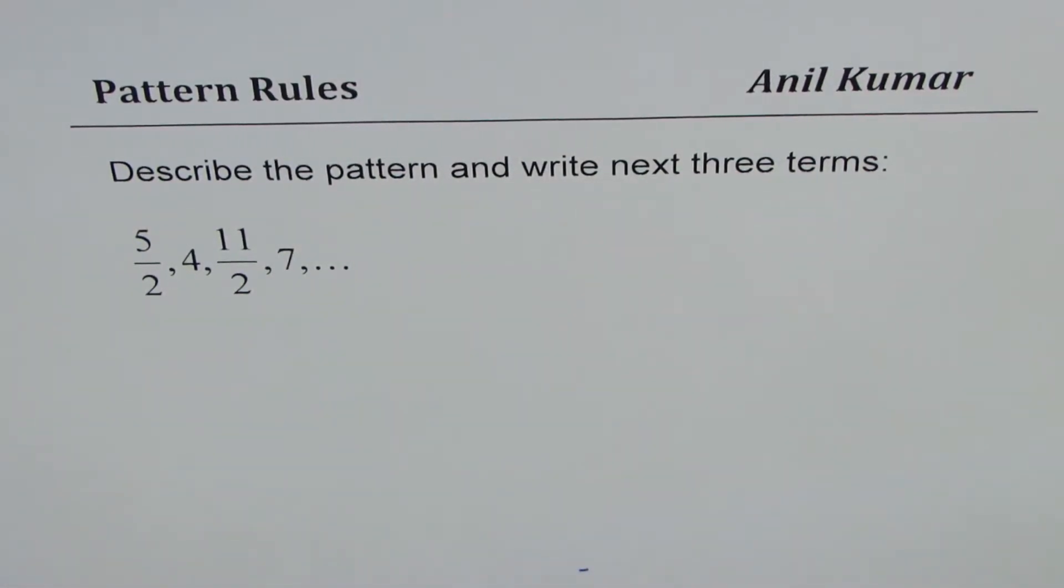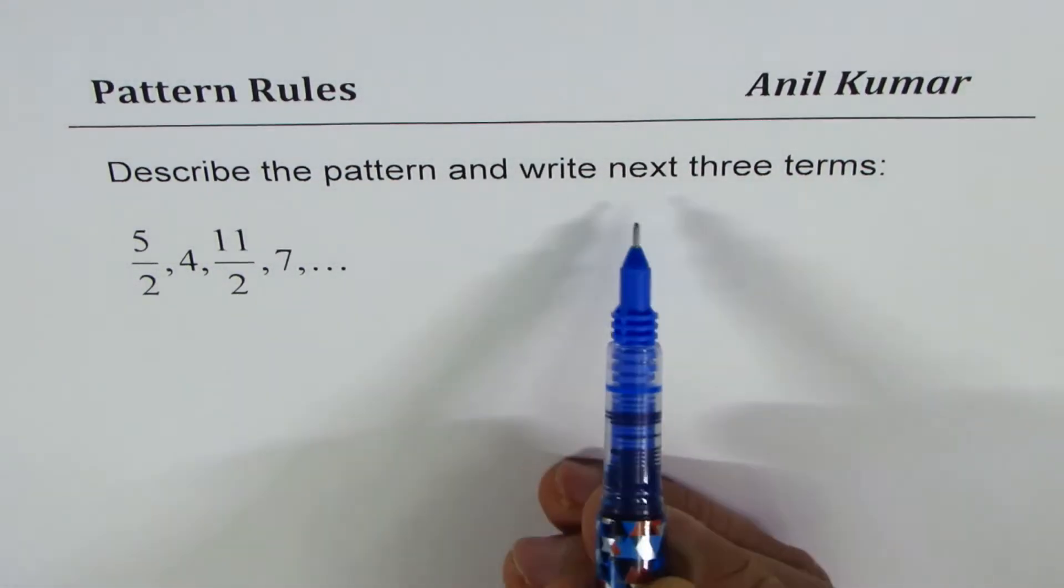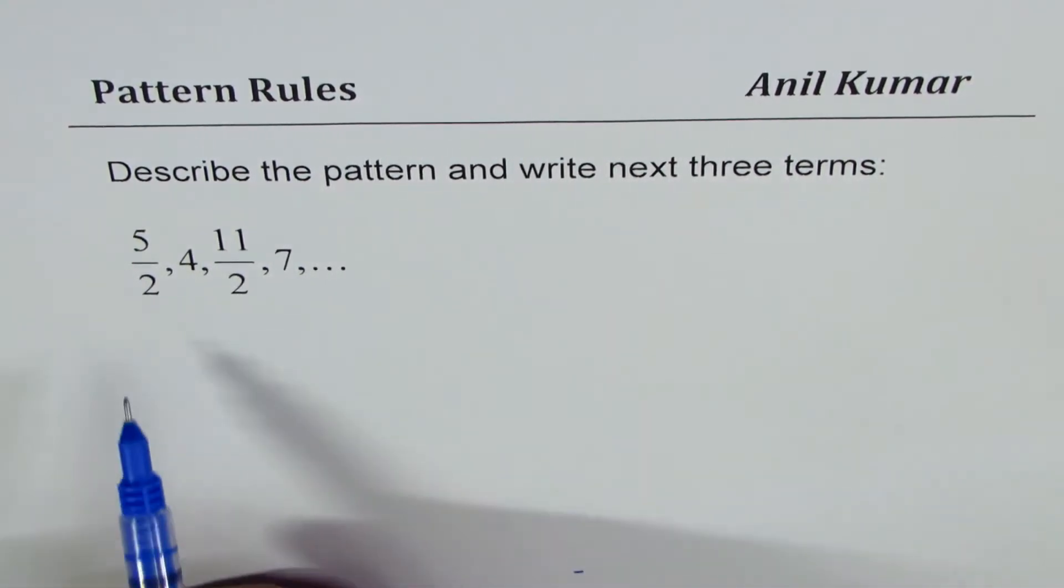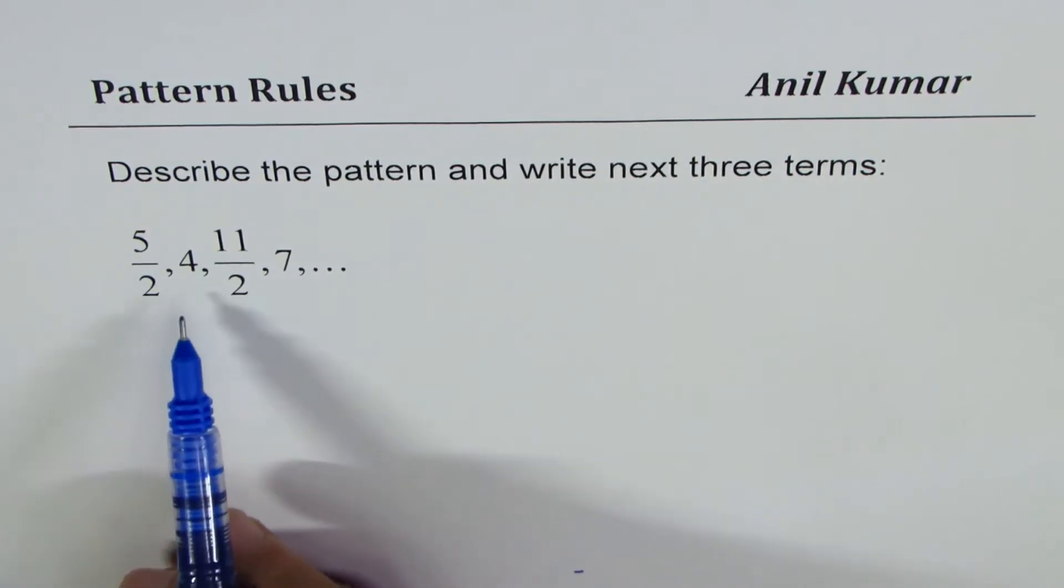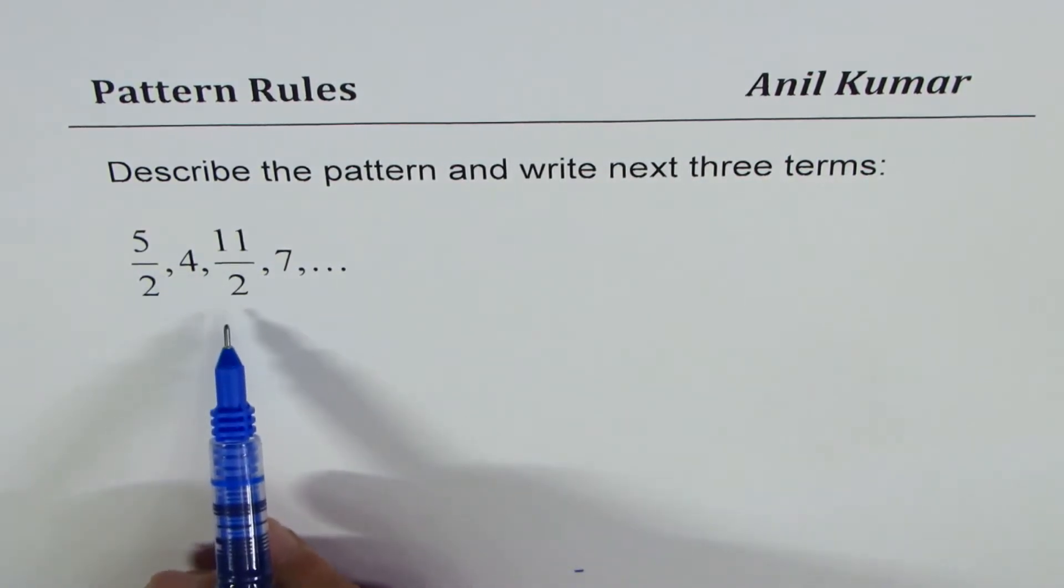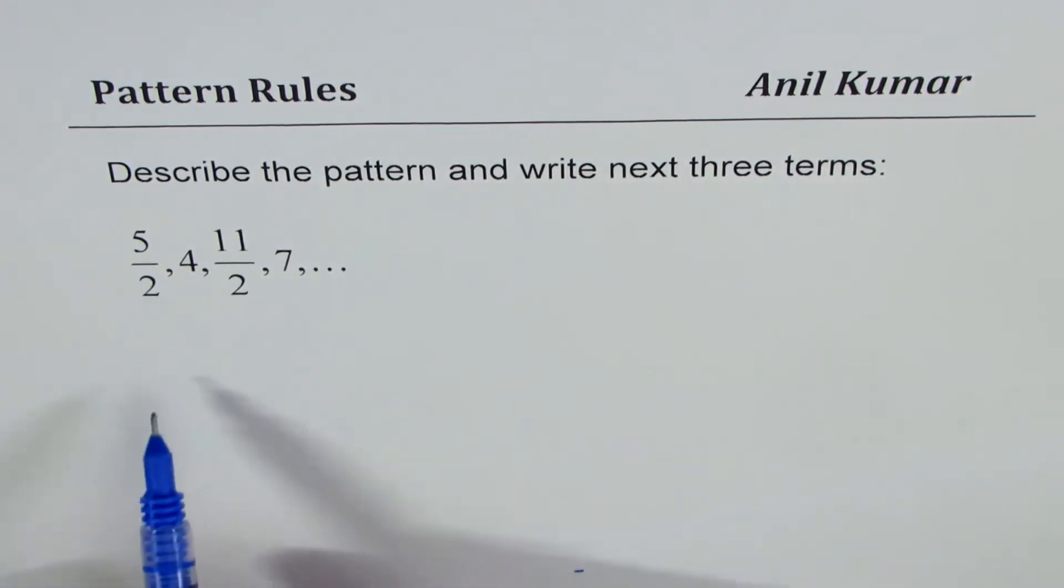I'm Anil Kumar and in this video we'll look into a pattern which is for middle school students. The question here is to describe the pattern and write next three terms: 5 over 2, 4, 11 over 2, 7. You may pause the video, answer the question and then look into my suggestions.